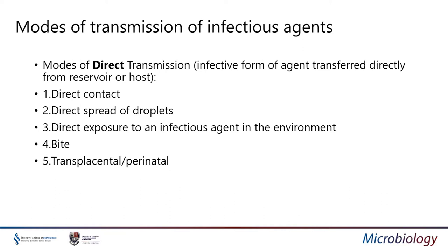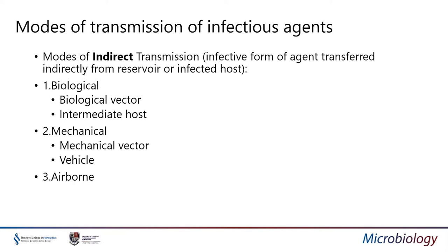Direct transmission is where the infective form of the agent is transferred directly from the reservoir or host to another person — through direct contact using the hands, direct spread of droplets, direct exposure to an infectious agent in the environment such as laboratory spills, a bite, or transplacental perinatal transmission. Indirect transmission modes include biological vectors, mechanical vectors or vehicles, and airborne transmission.